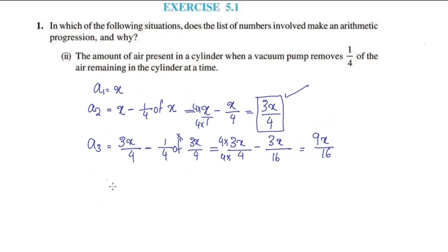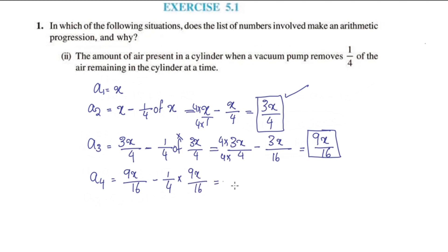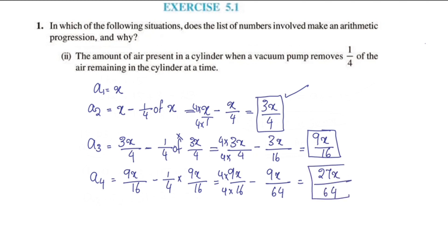For the fourth term A4, we remove 1/4 of 9x/16 from 9x/16. A4 = 9x/16 minus 9x/64 = 27x/64.